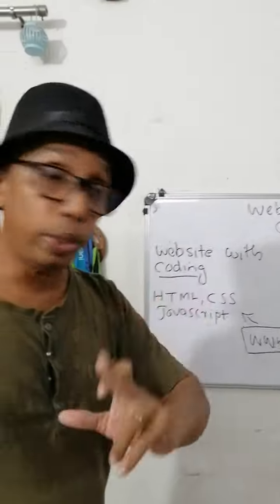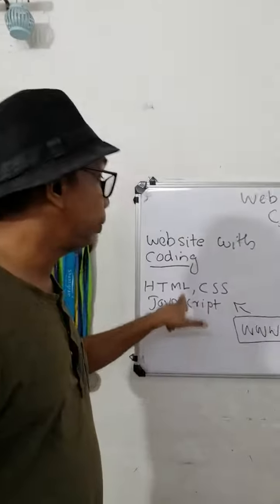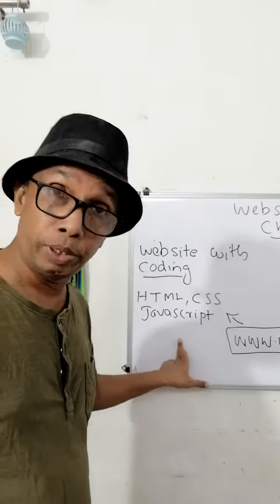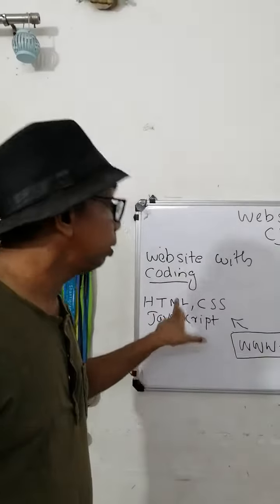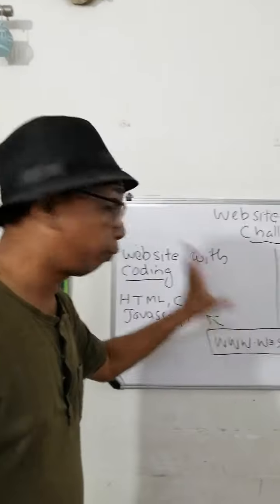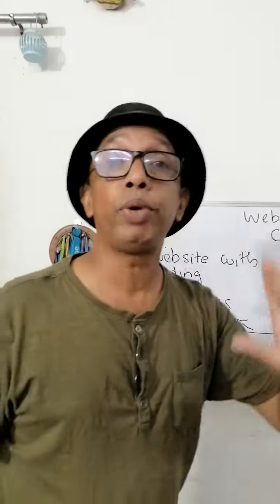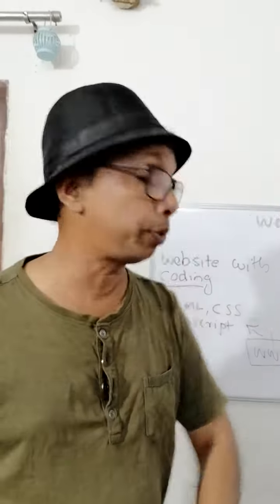If you want to do coding, you have to study HTML, CSS, and JavaScript. These three coding languages are very important for making a website.